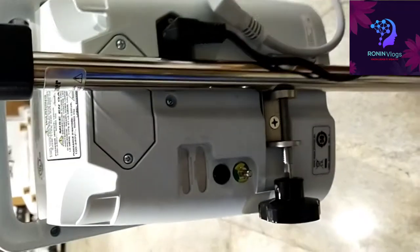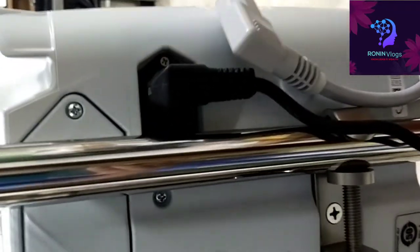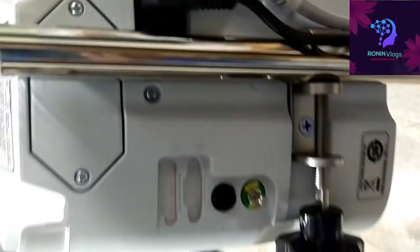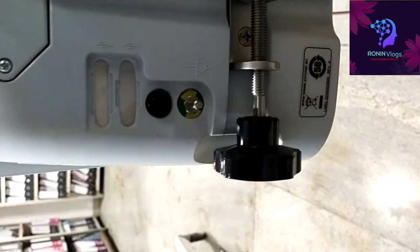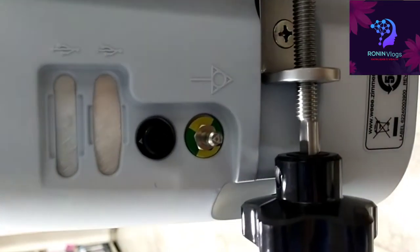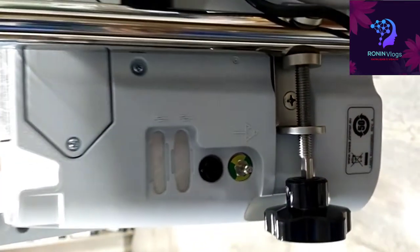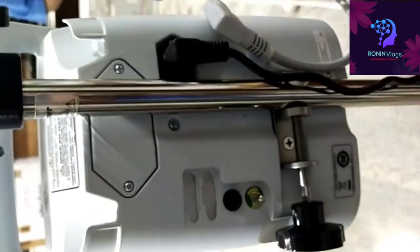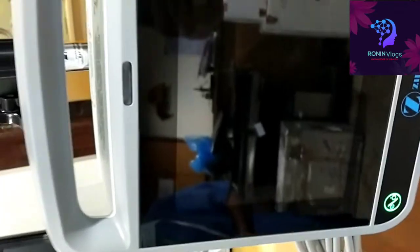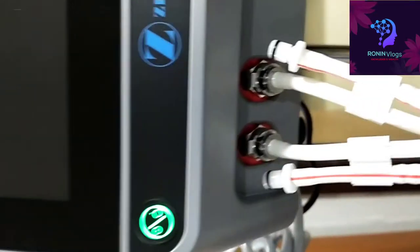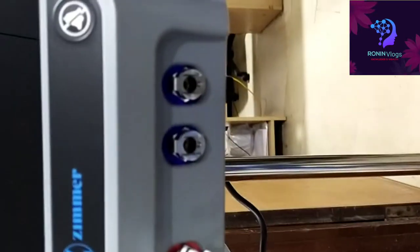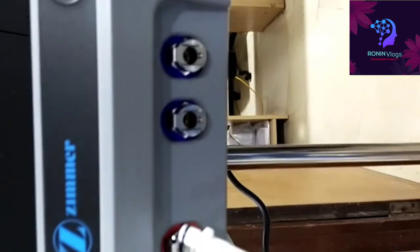So backside, this is the backside. Here we are connecting the power cord, and there is a filter also available, fuse also available. And this is the main screen, it's a touchscreen, and here we connect to the cuff. At a time we can use two cuffs, that is a specialty.